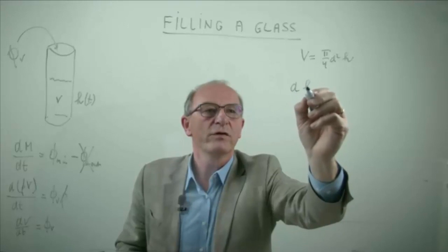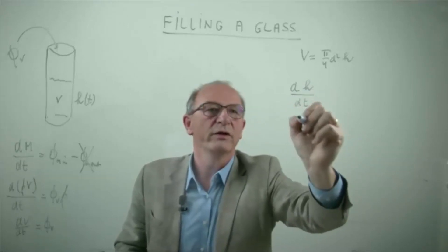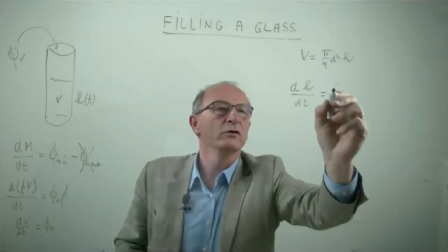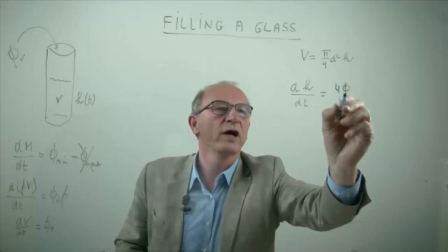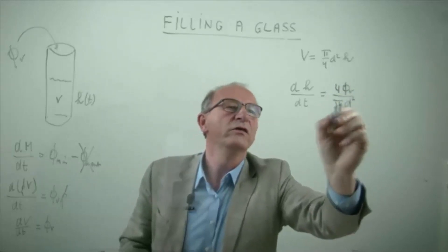...then we get the change of height divided by the time, because the height is dependent on the time, is equal. And then we divide through the surface area, we get four times the volume flow rate divided by pi d squared.